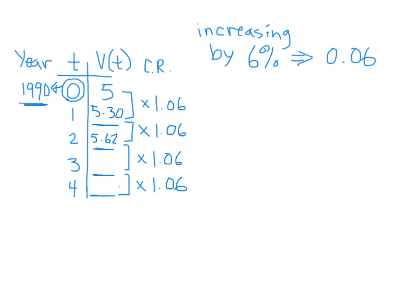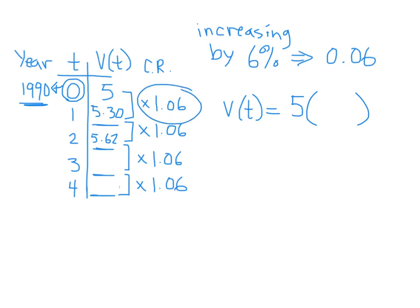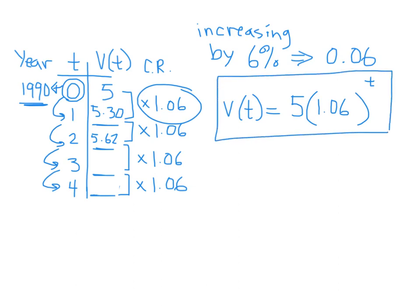To come up with the formula, the value of the card is equal to the initial value — which is $5 — times the base in brackets, which is always the common ratio. We know the common ratio is 1.06. Then it's to the exponent time over 1, because this increase happens every one year. We won't write the 'over 1,' but this is the value of the card for any given time.